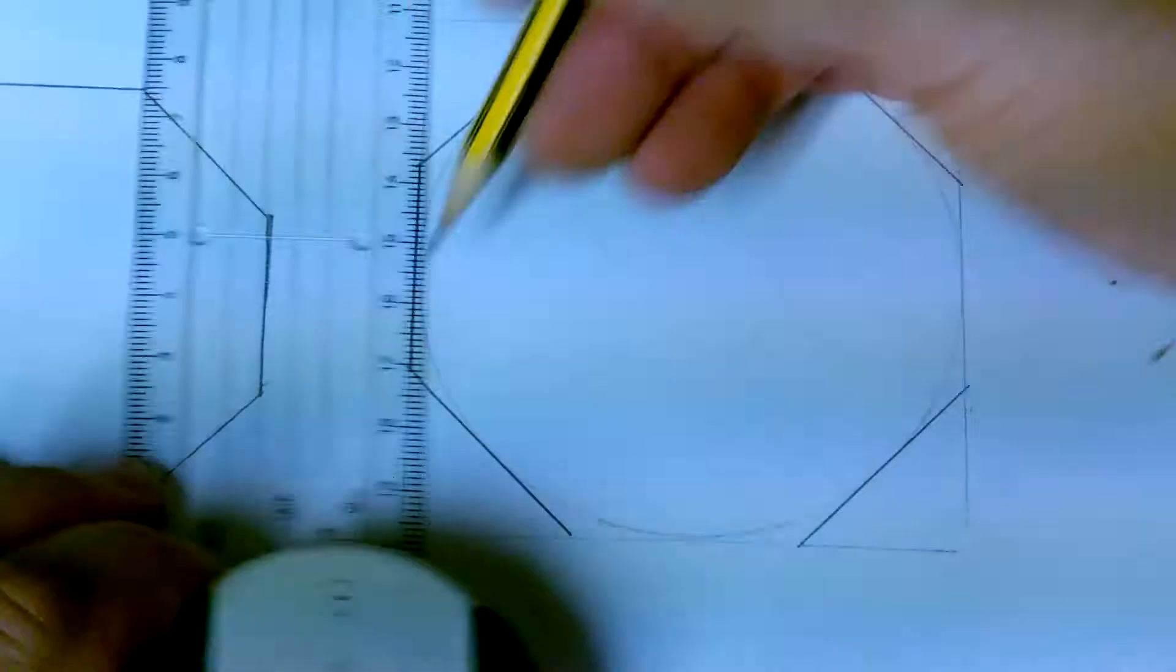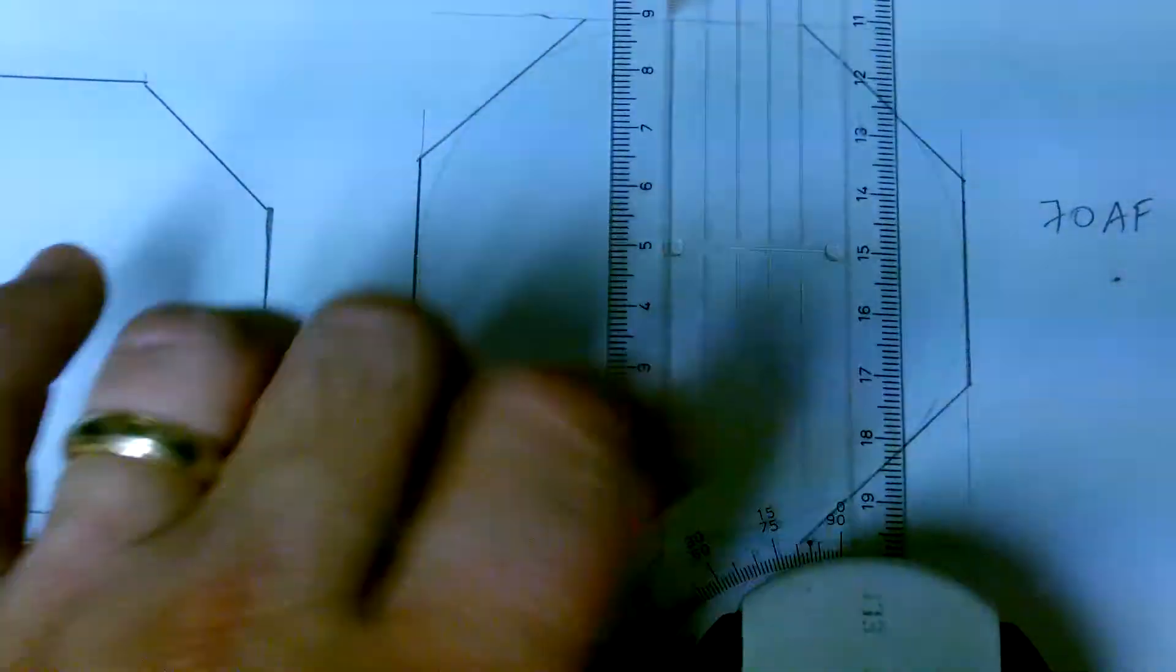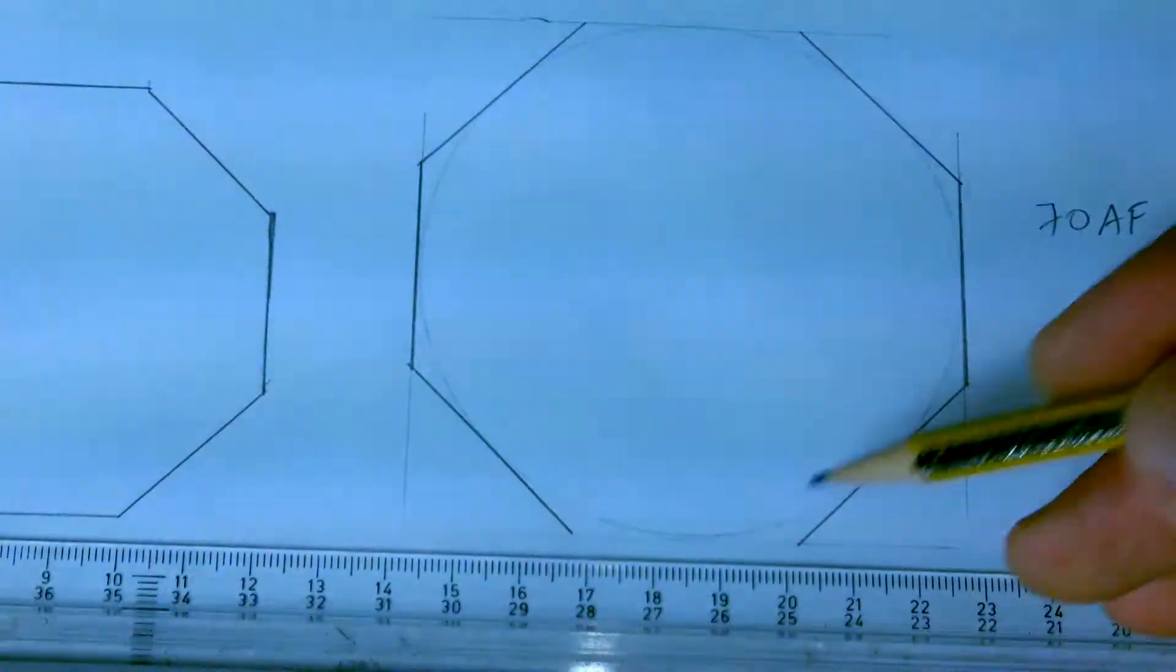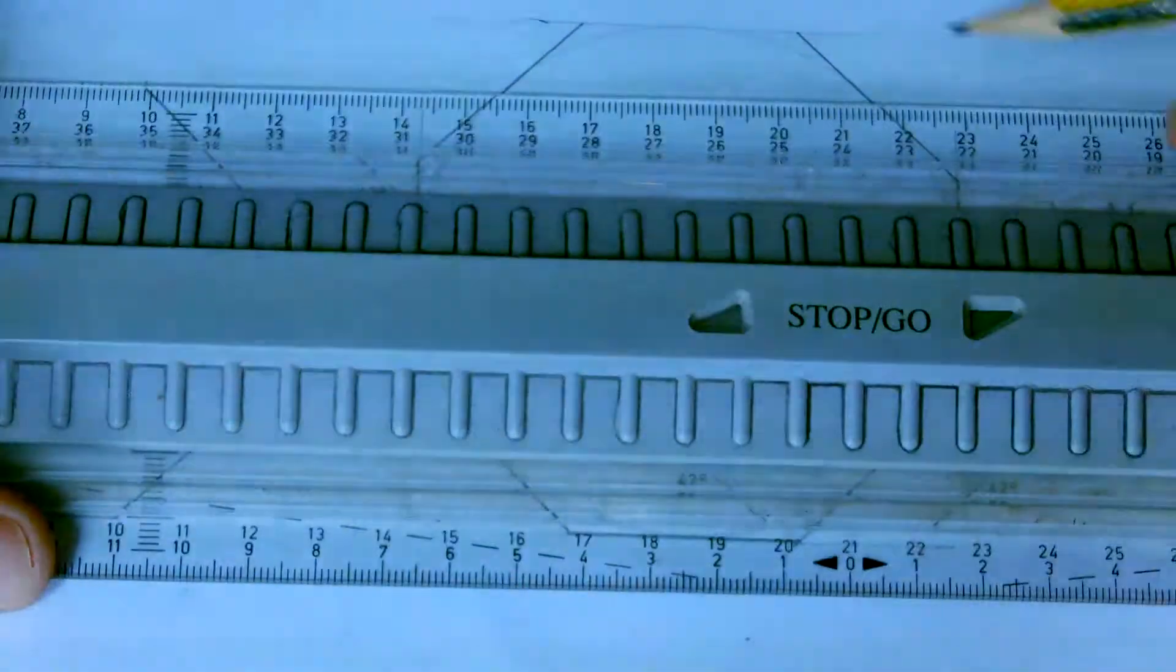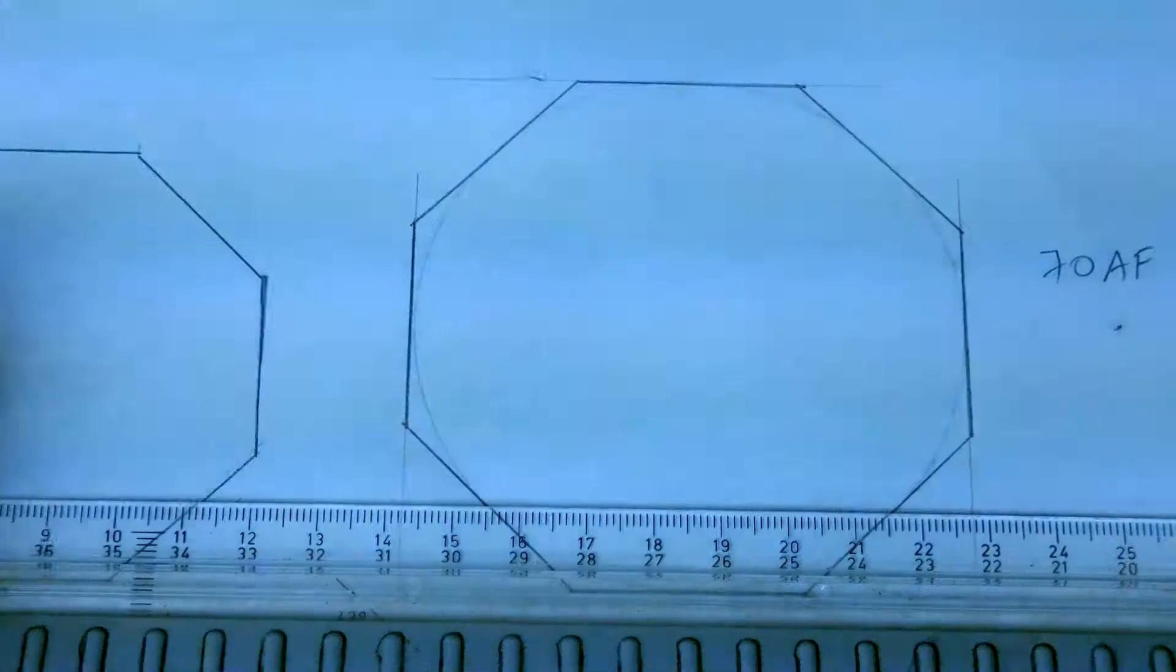I need a vertical here, vertical here, horizontal, horizontal. So that's your octagon AF, across flats.